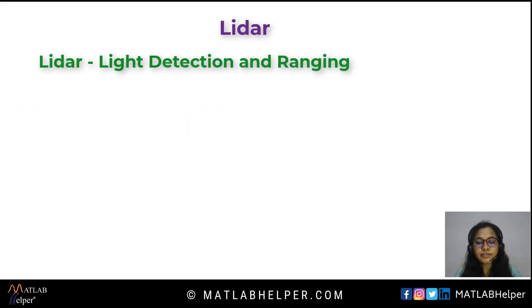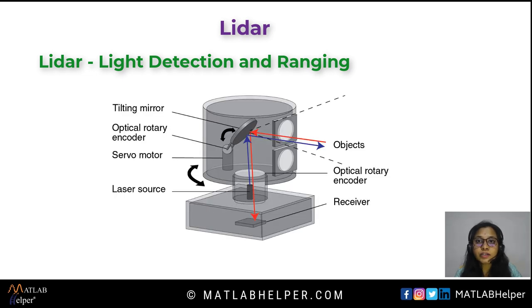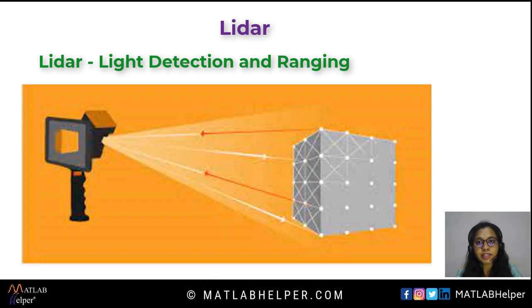LIDAR stands for Light Detection and Ranging. It works by emitting a beam or pulse of laser or visible light. The time taken by the reflected signal to travel back to the source from an object or surface is used to calculate the distance between them. It is also known as 3D scanning — any object or surface that can reflect light can have a 3D model developed from it.